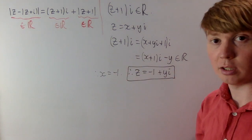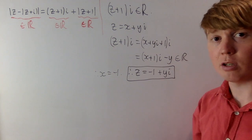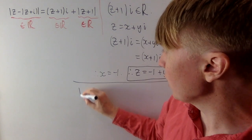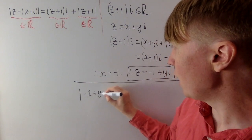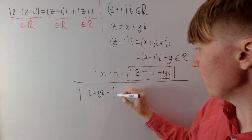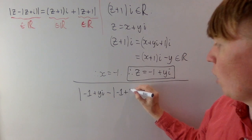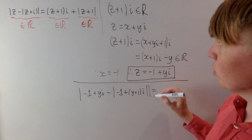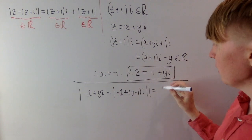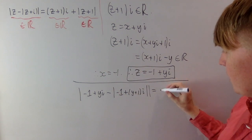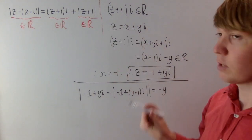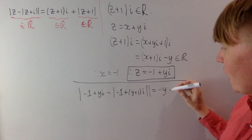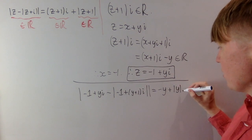Let's substitute z = -1 + yi into the original equation, reducing it to solving an equation for a real number. We get the absolute value of minus 1 plus yi, minus the absolute value of minus 1 plus (y+1)i, from the extra plus i term. This equals z plus i times i, which is yi times i, giving minus y. The absolute value of z plus 1 is the absolute value of yi, or just the absolute value of y.